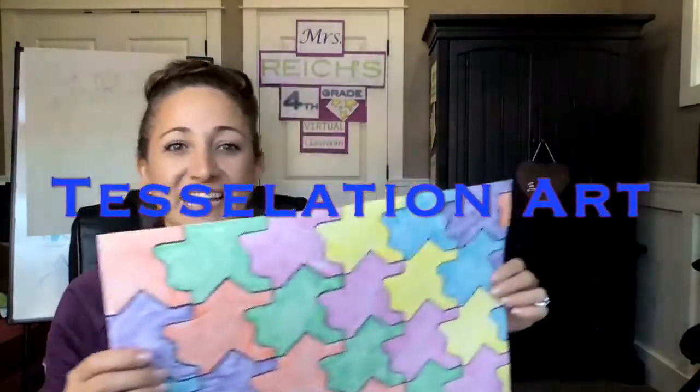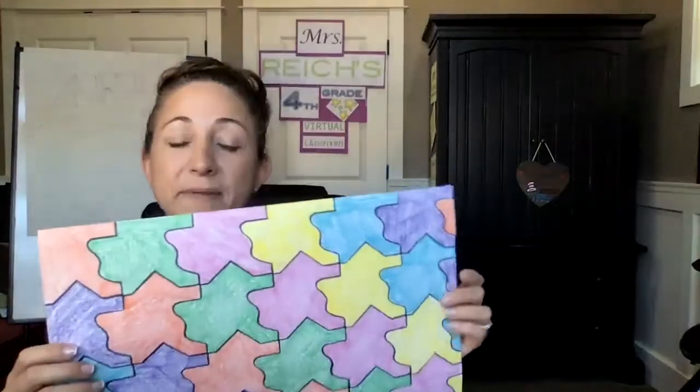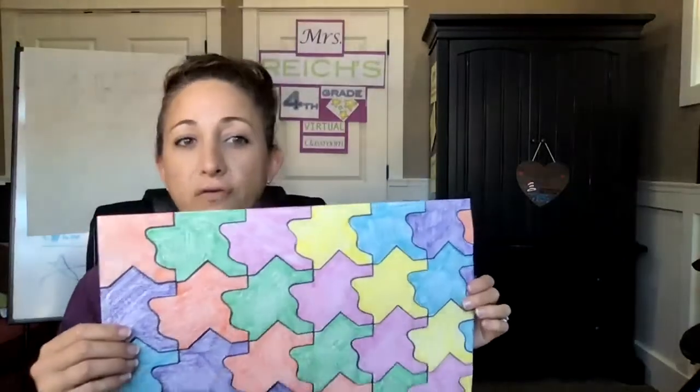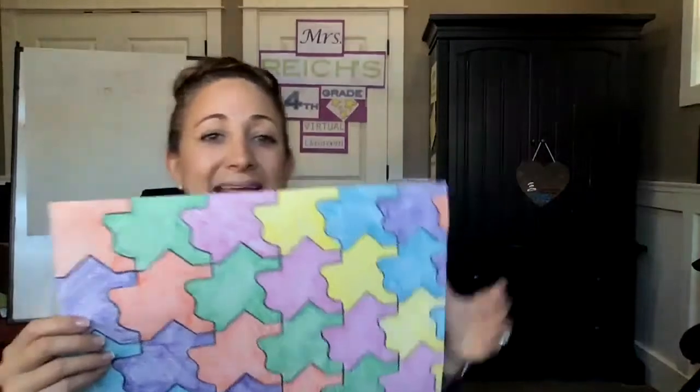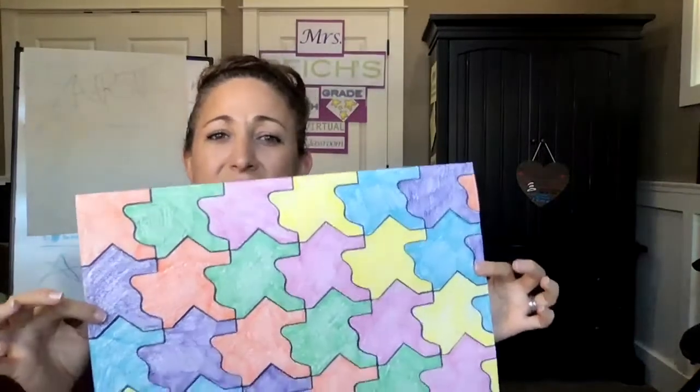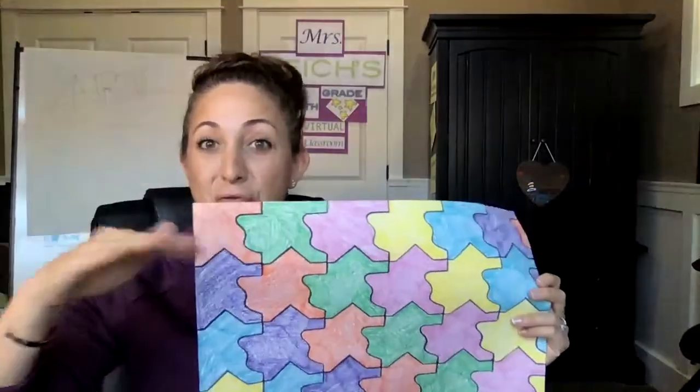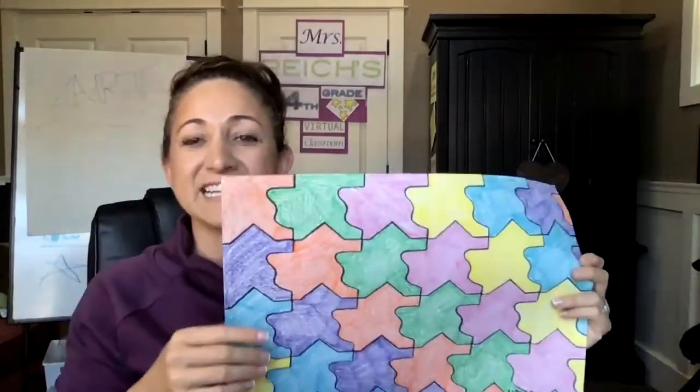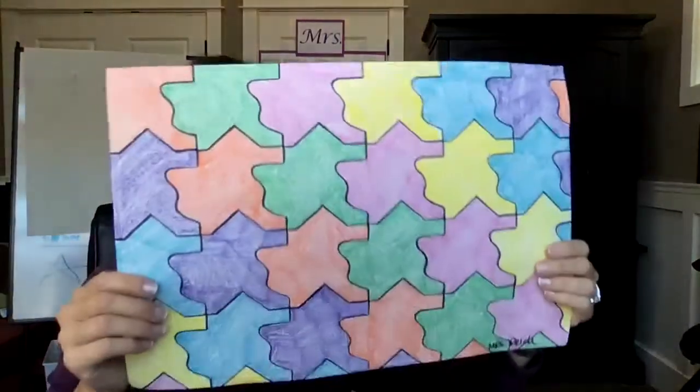Tessellation art is created when a shape is repeated over and over again covering something without any gaps or overlaps. Another word for tessellation is tiling. You can kind of see how like on the floor there's tile and different designs. So we're going to be making a tessellation pattern.